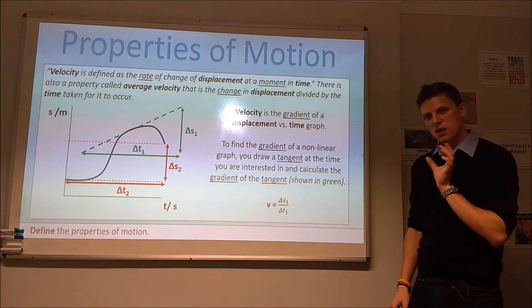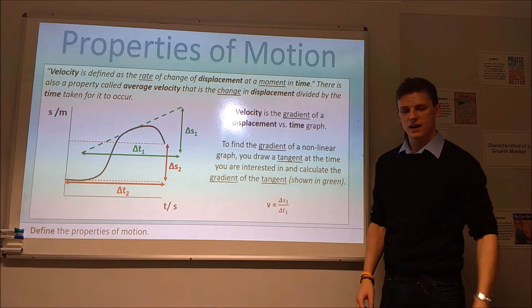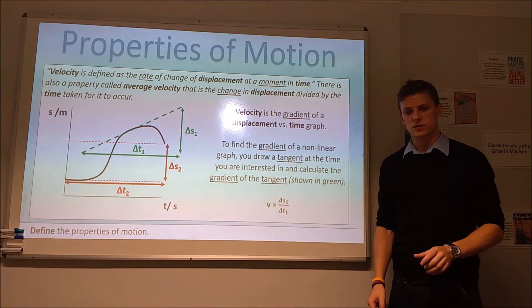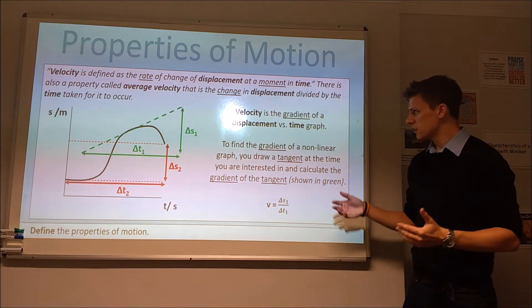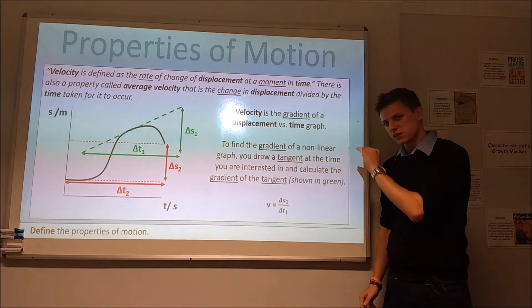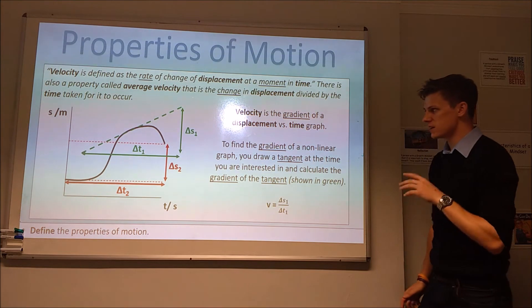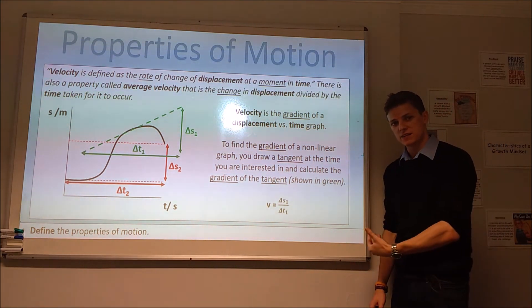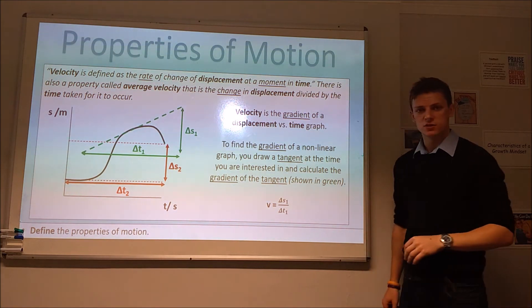There's another property similar called average velocity. The average velocity of an object is the total displacement the object experiences divided by the time over which that occurs. There's subtly different versions of velocity, and we need to know the distinction between the two. We're going to first talk about instantaneous velocity, or velocity for short.